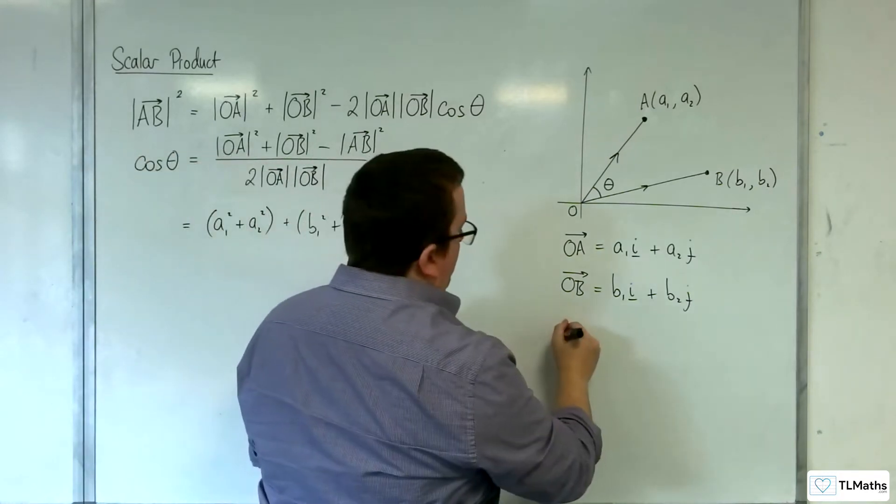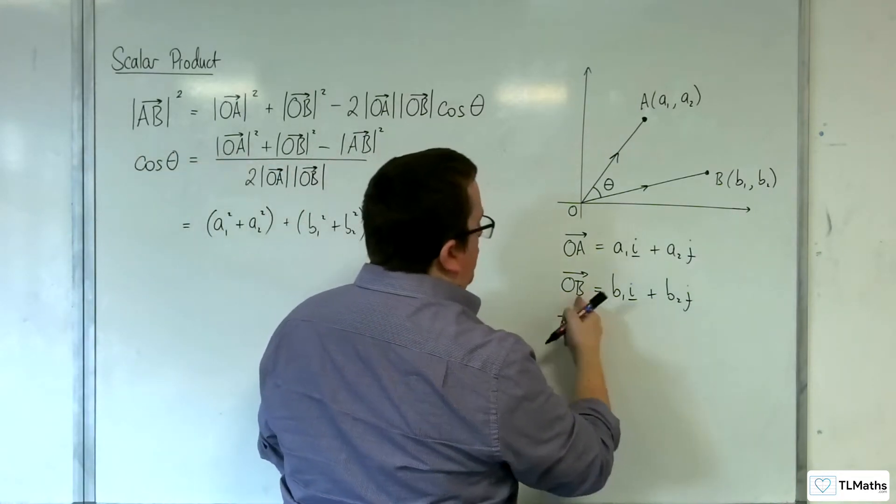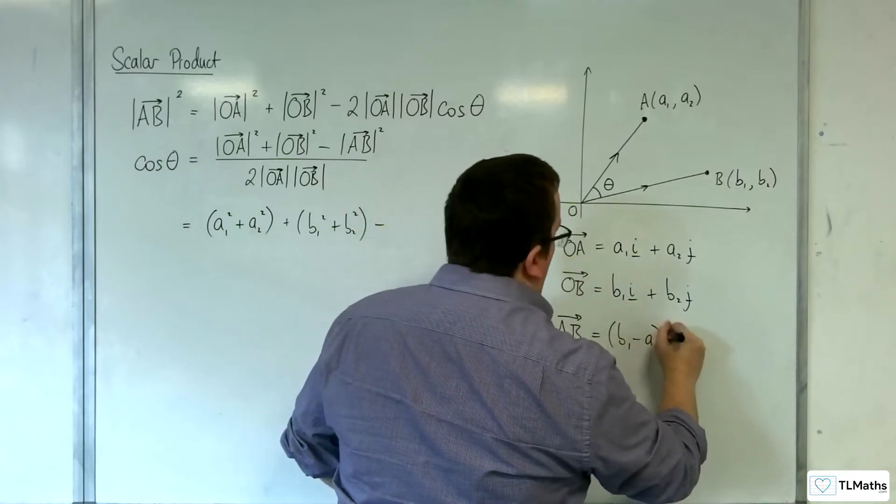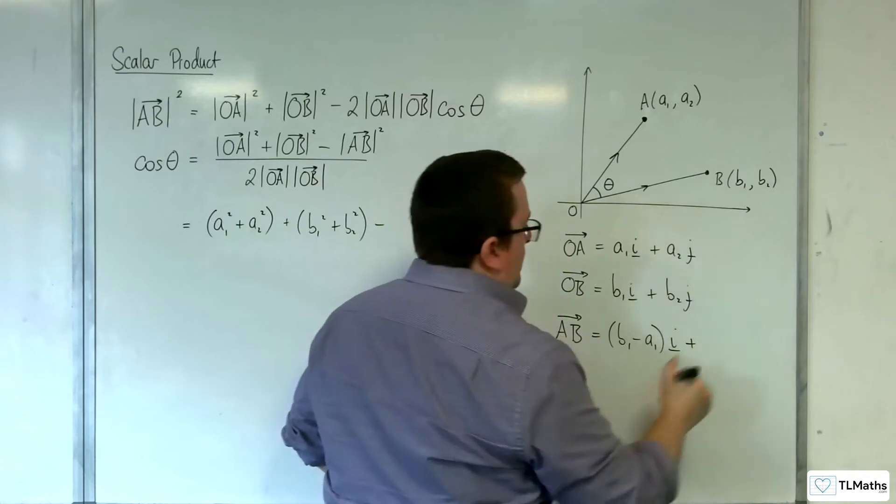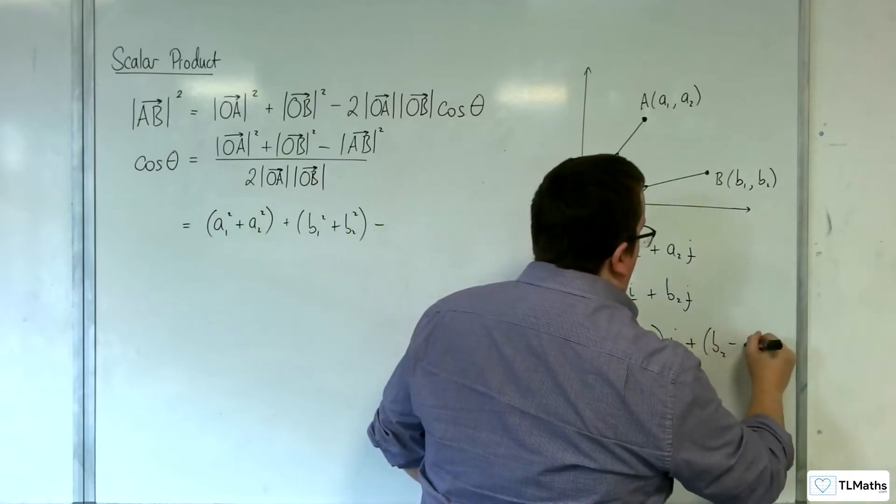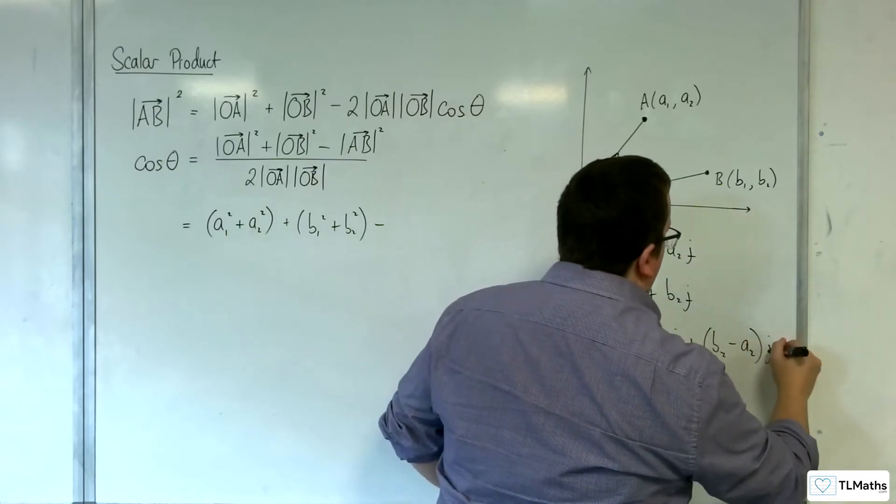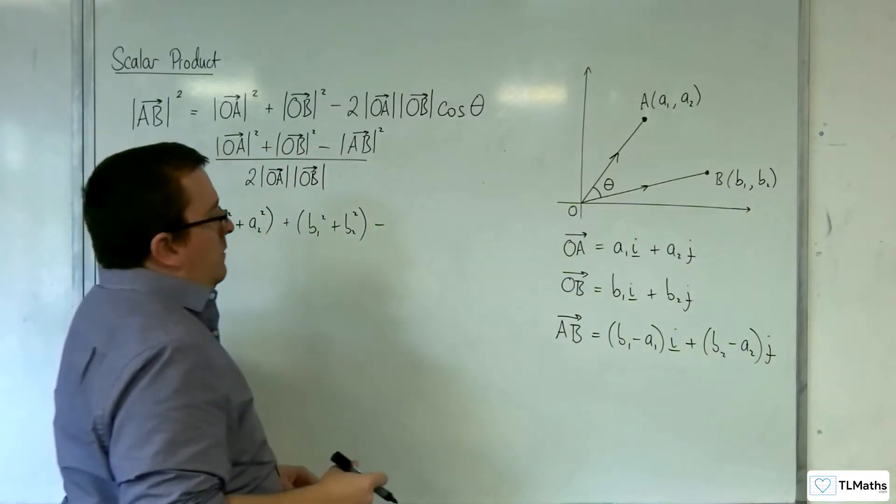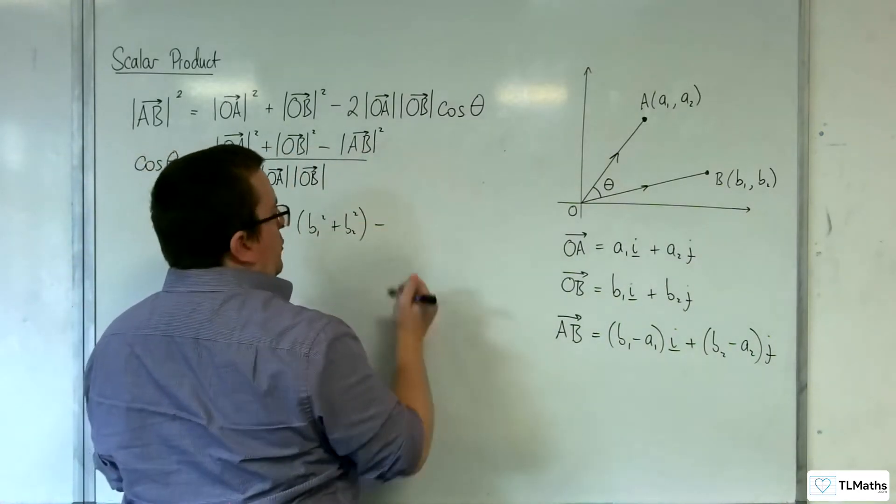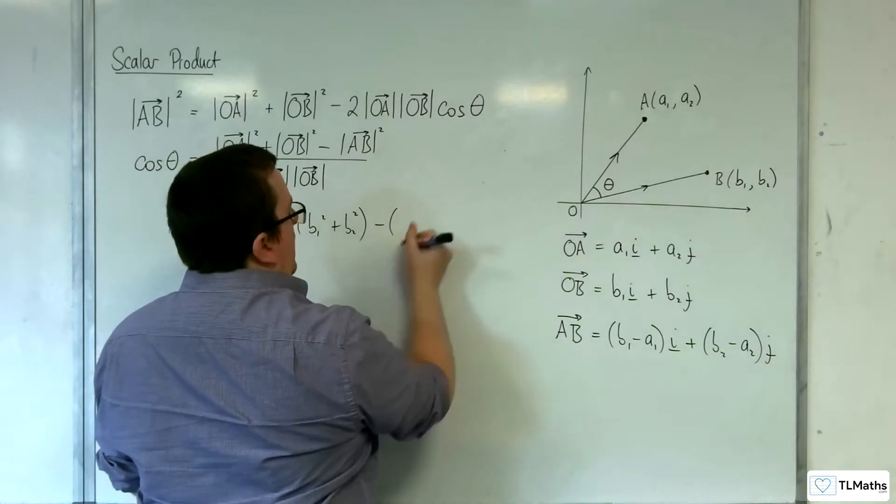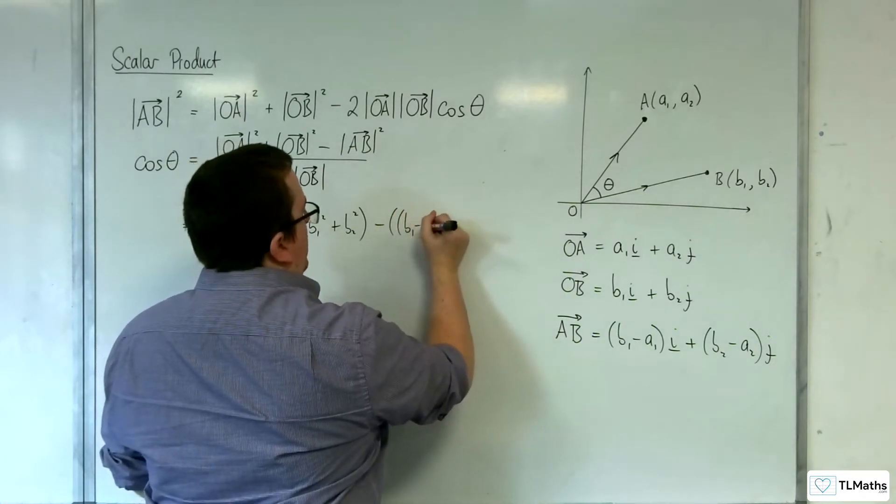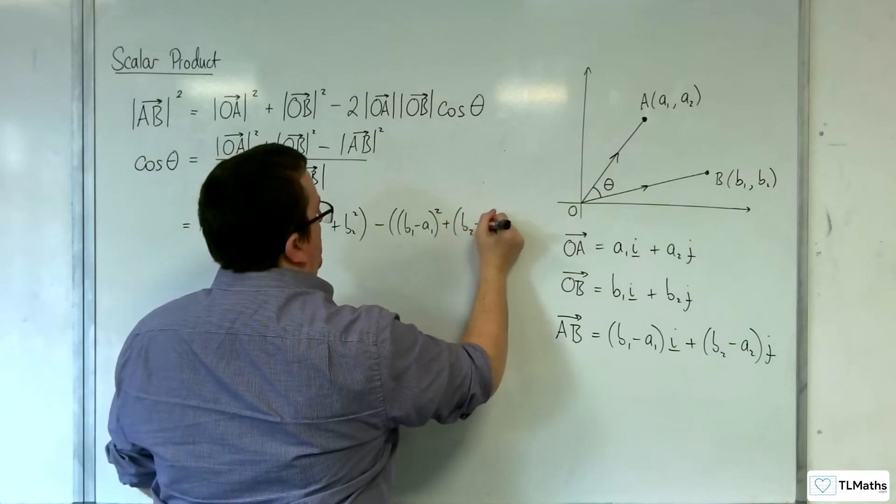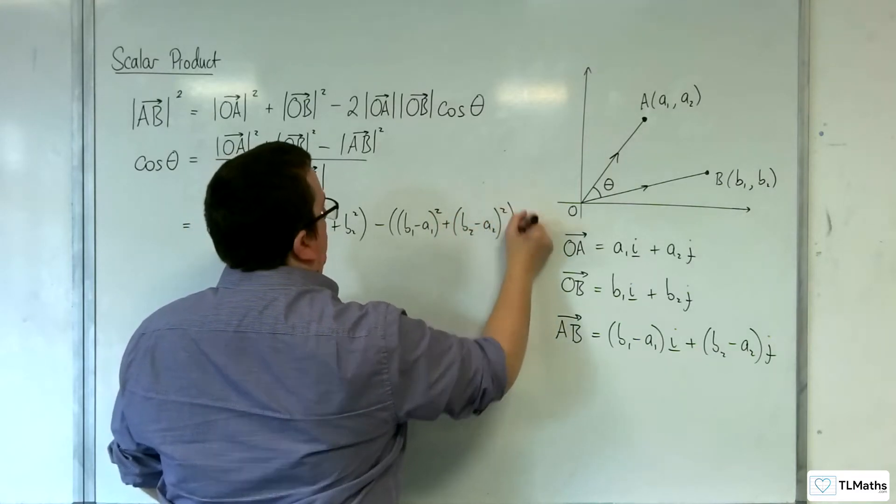So AB is OB minus OA. So we would have B1 take away A1 I plus B2 take away A2 J. So we want that in the same form, so squared.